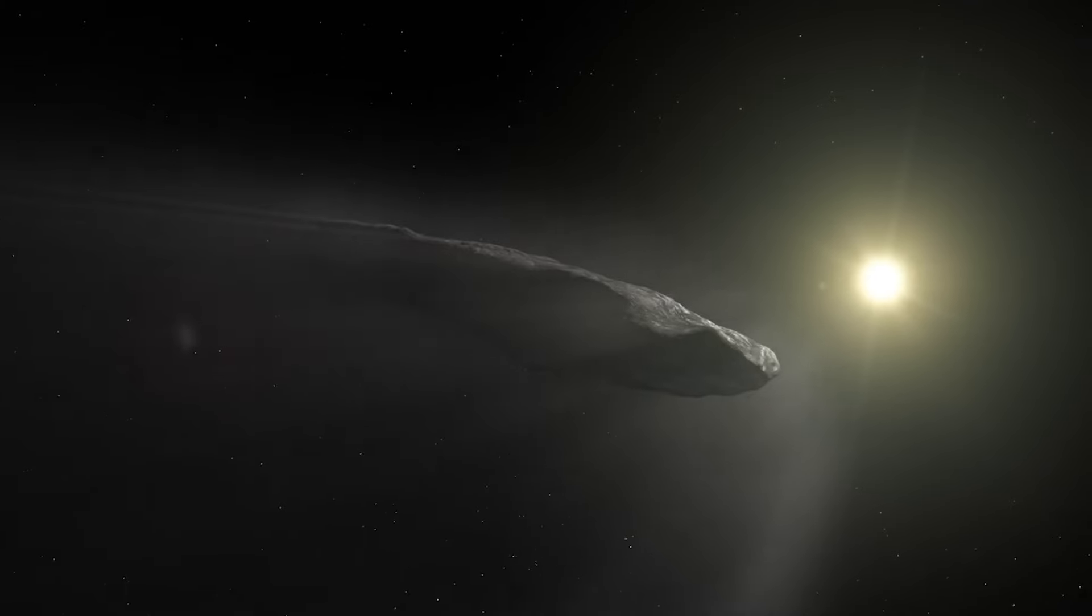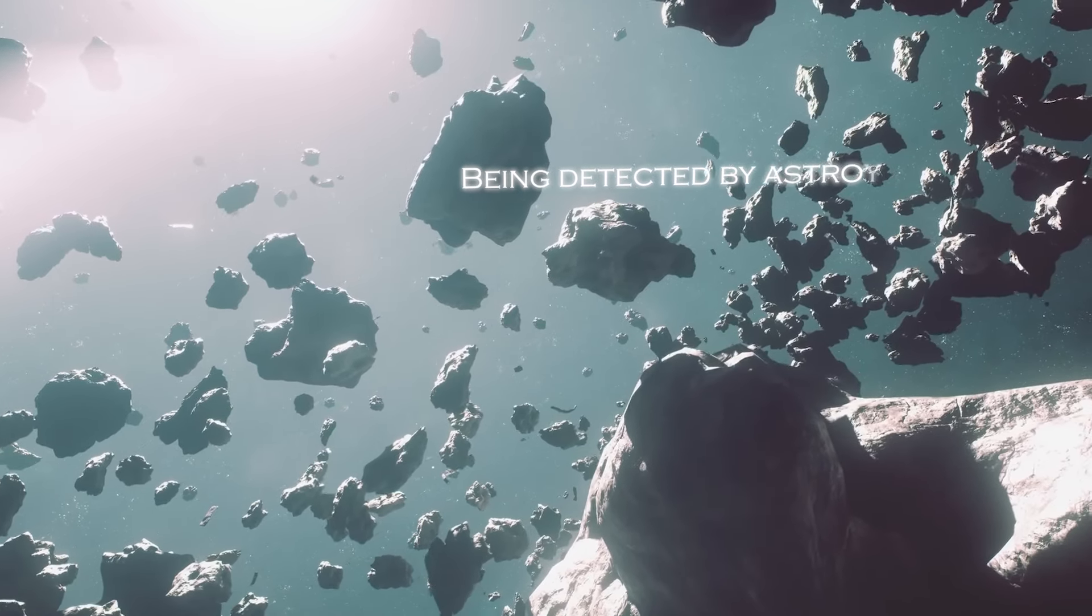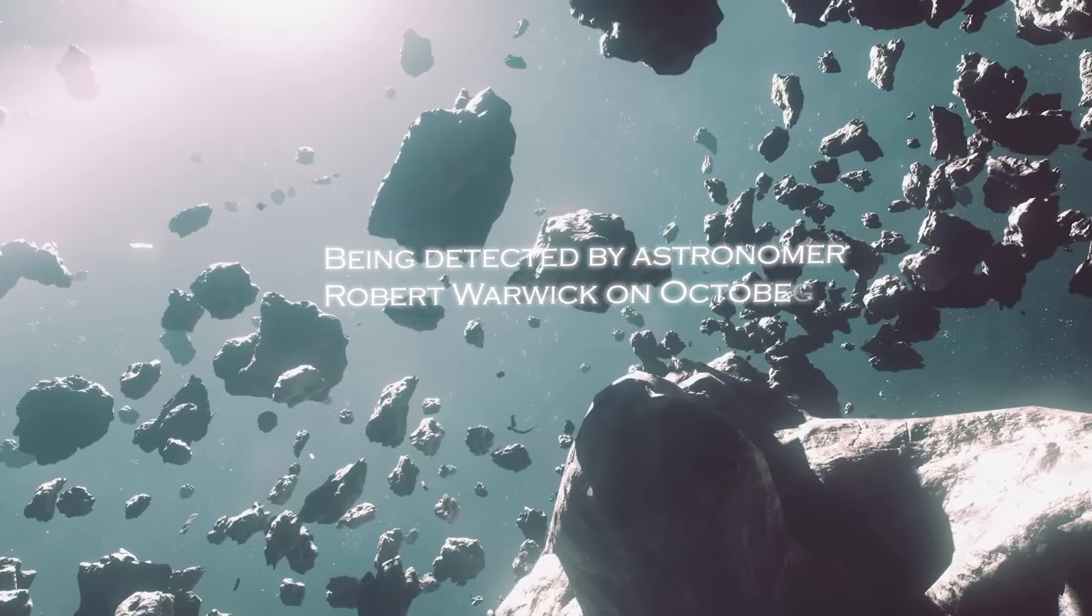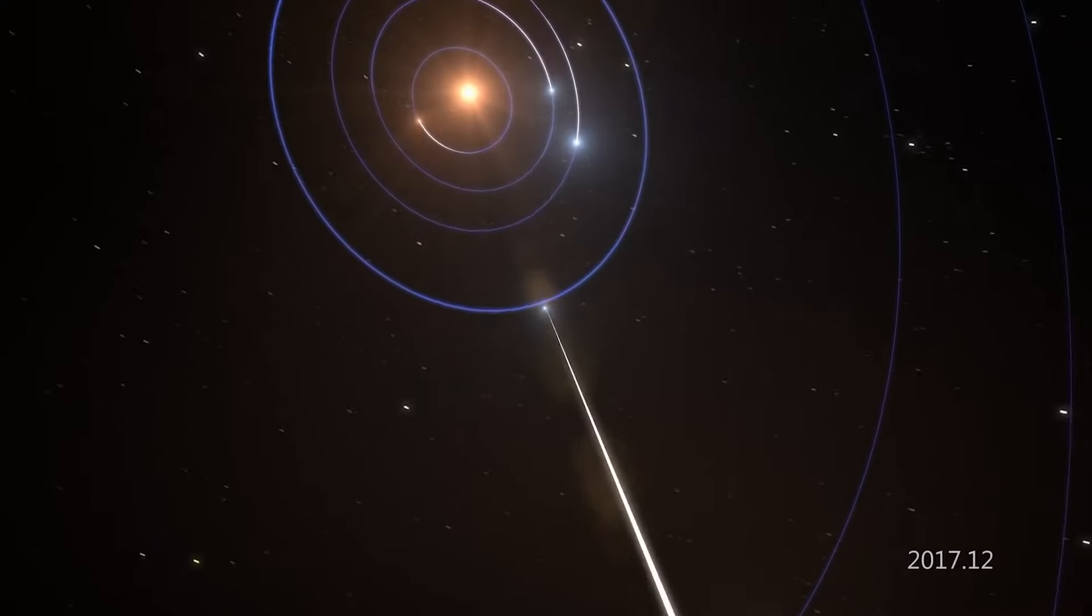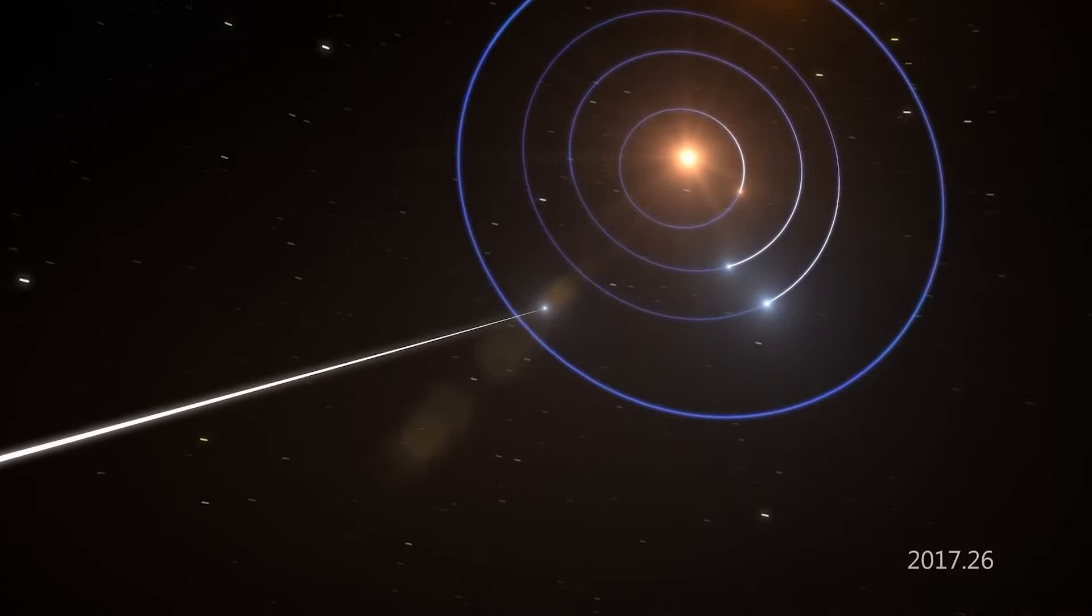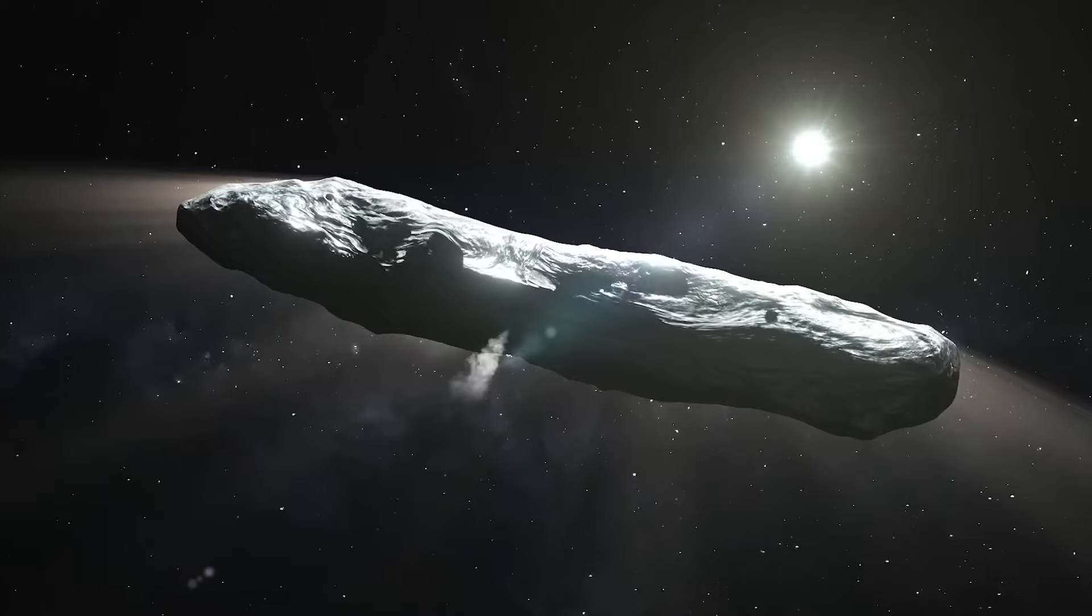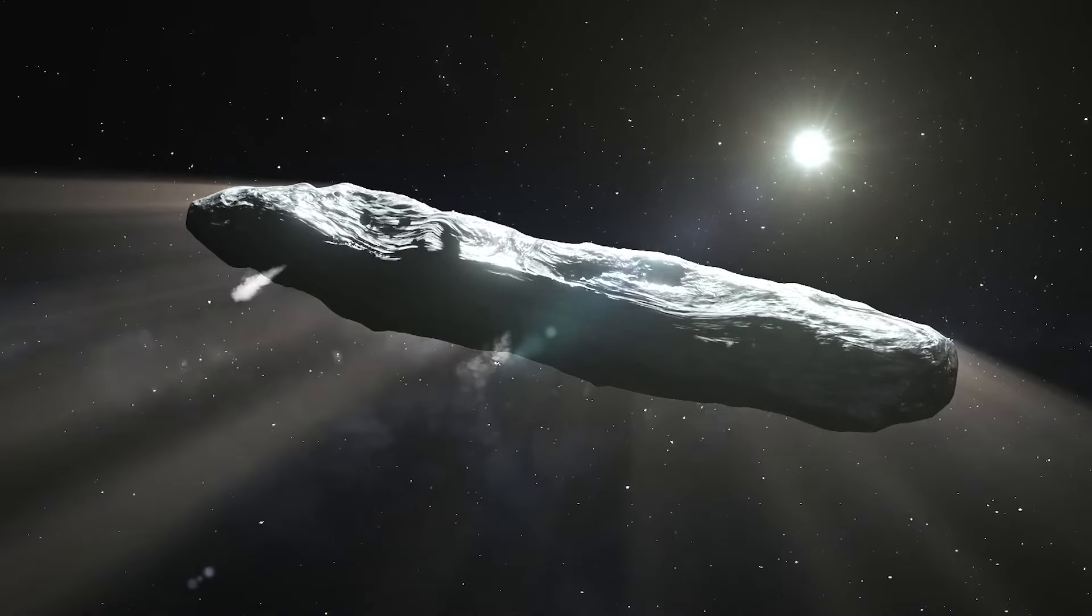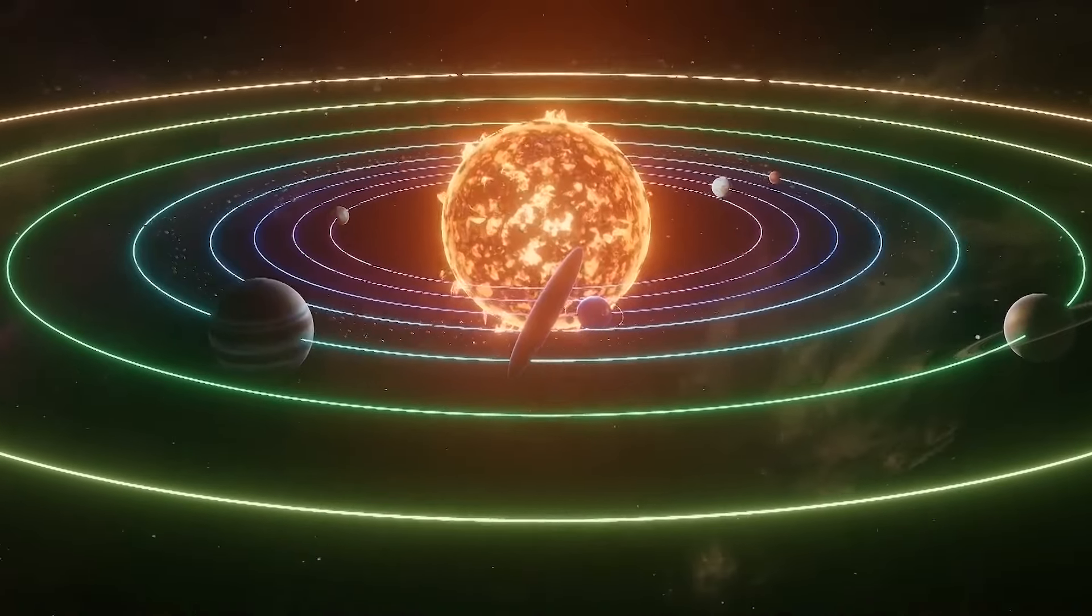Its trajectory took it from another system to our own, being detected by astronomer Robert Warwick on October 19, 2017. The discovery was carried out using the telescope located at the Haleakala Observatory in Hawaii. Oumuamua presented an elongated appearance resembling a cigar-shaped object in space, notable for its striking size.